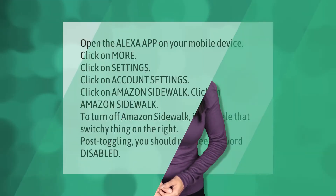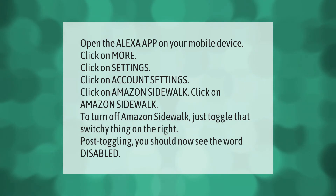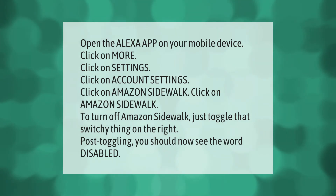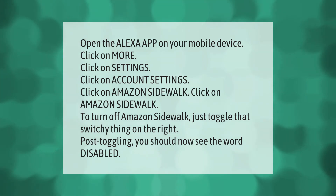Open the Alexa app on your mobile device. Click on More, click on Settings, click on Account Settings, click on Amazon Sidewalk. To turn off Amazon Sidewalk, just toggle the switch on the right. After toggling, you should now see the word Disabled.